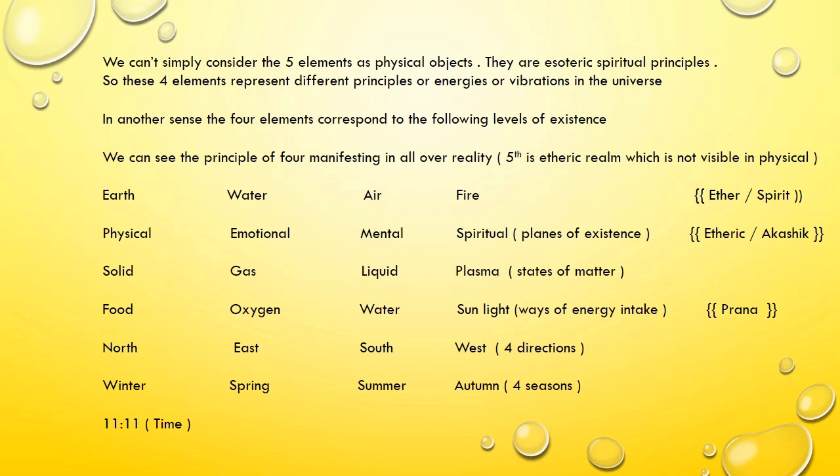We can't simply consider the five elements as physical objects — they are esoteric spiritual principles. If we omit the fifth element, which represents the etheric realm, and look at the four elements, these four represent different principles, energies, or vibrations in the universe. In another sense, the four elements correspond to different levels of existence.